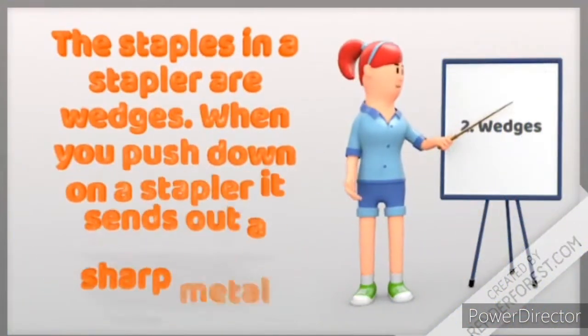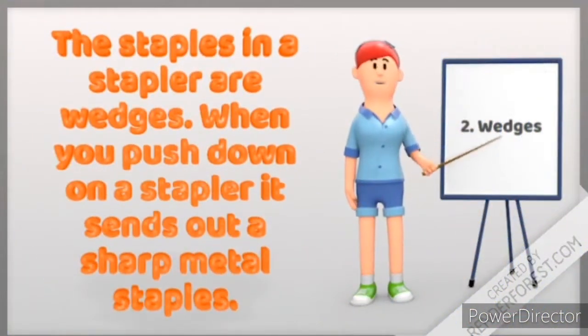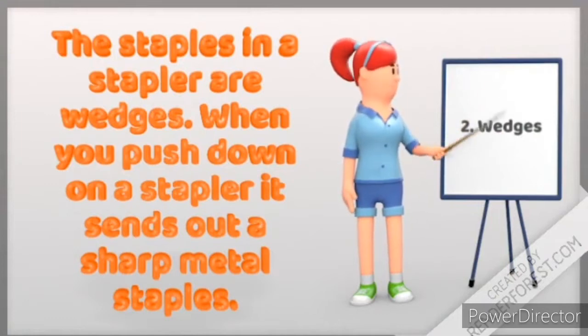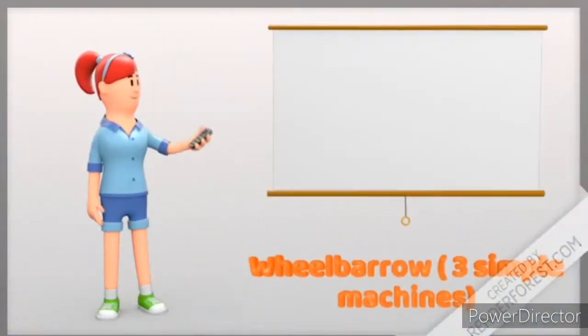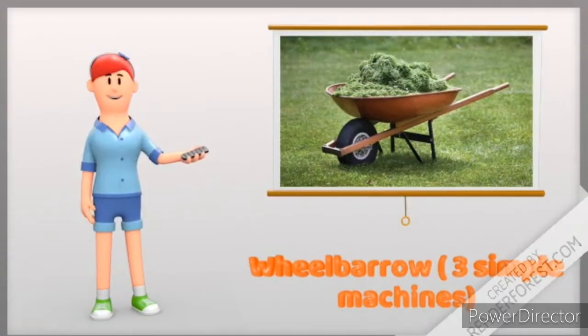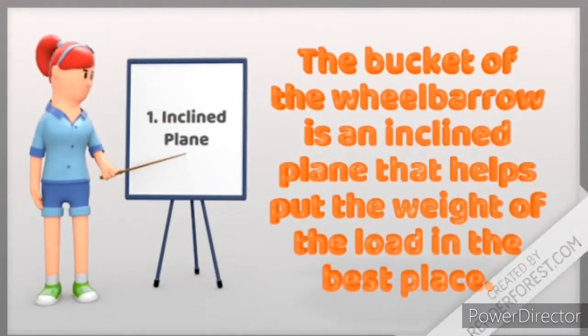Another example is a wheelbarrow. A wheelbarrow is made up of three simple machines. One, the bucket of the wheelbarrow is an inclined plane that helps put the weight of the load in the best place to allow us to move easily.